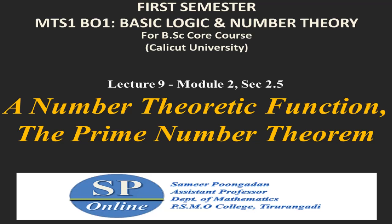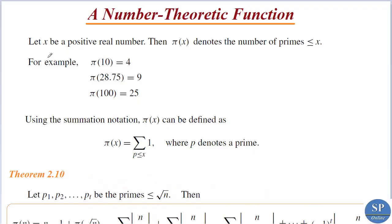Hello everyone. Today we are going to discuss a number theoretic function which can be used to find the number of primes less than or equal to a given number. We will also discuss the famous prime number theorem. If x is a positive real number, then π(x) denotes the number of primes less than or equal to x. For example, π(10) is equal to 4, because the primes less than or equal to 10 are 2, 3, 5, 7.